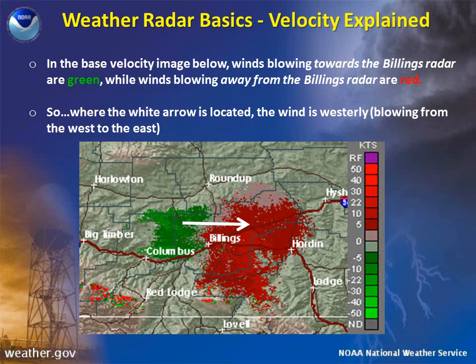The radar has an algorithm built into it that allows it to track where objects are moving with time and how fast they are moving. When objects are moving towards the radar, they register as inbound velocities and appear as cool colors, such as green. When objects are moving away from the radar, they register as outbound velocities and appear as warm colors, such as red.